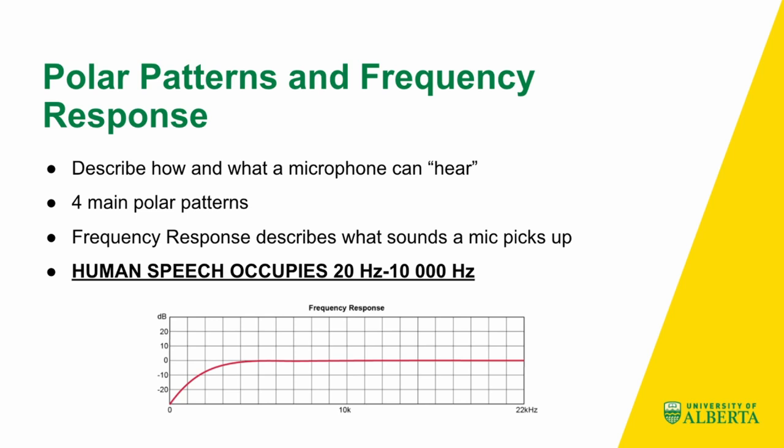At the bottom of the screen there is a frequency response graph, which you should be able to find in any microphone manual. If you can't find one of these for a microphone, don't buy it, because this shows you the sounds that a microphone can hear. The way to read one of these graphs is to look at the y-axis, which has decibels or dB at the top and goes from 20 to negative 20. The x-axis runs from 0 to 22,000 — the general range of human hearing. A red line represents the ability of the microphone to accurately record a sound.